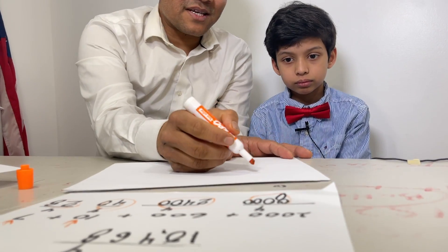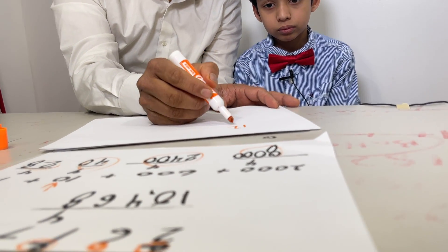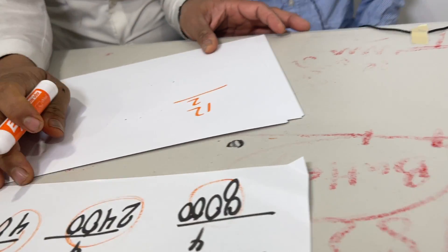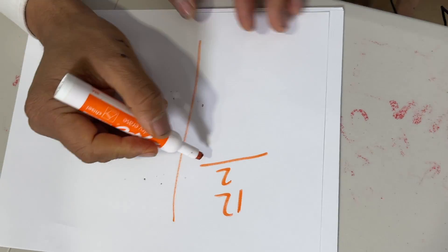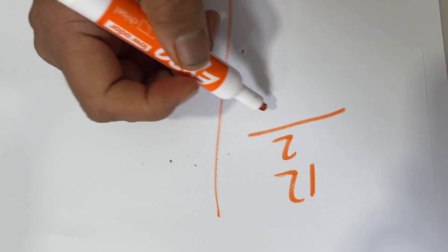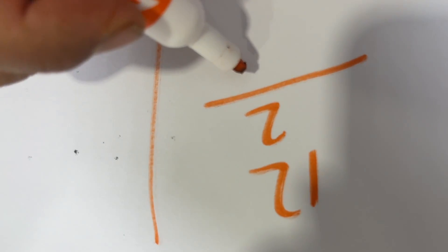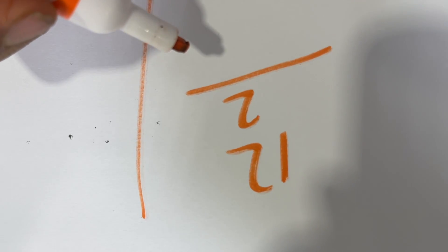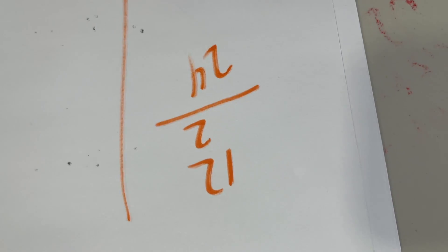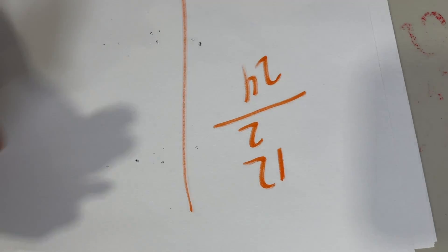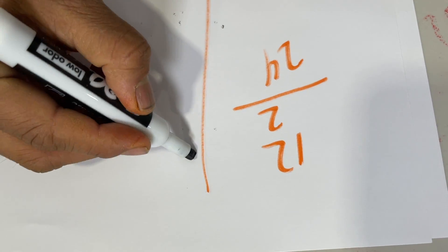Can you show that multiplication is repeated addition by multiplying 12 times 2? Go ahead. 12 times 2 is 24. Good. Now, we are saying this is repeated addition — so in the number 12, what do you have? You have 1 repeated twelve times.